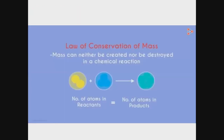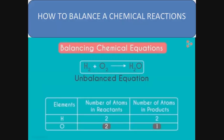Let's learn how to balance a chemical reaction. Chemical equations are balanced according to the law of conservation of mass, which states that mass can neither be created nor be destroyed in a chemical reaction. This means the number of atoms on the reactant side must equal the number of atoms on the product side. Through the example of the formation of water, we can easily understand how to convert an unbalanced reaction into a balanced chemical equation.